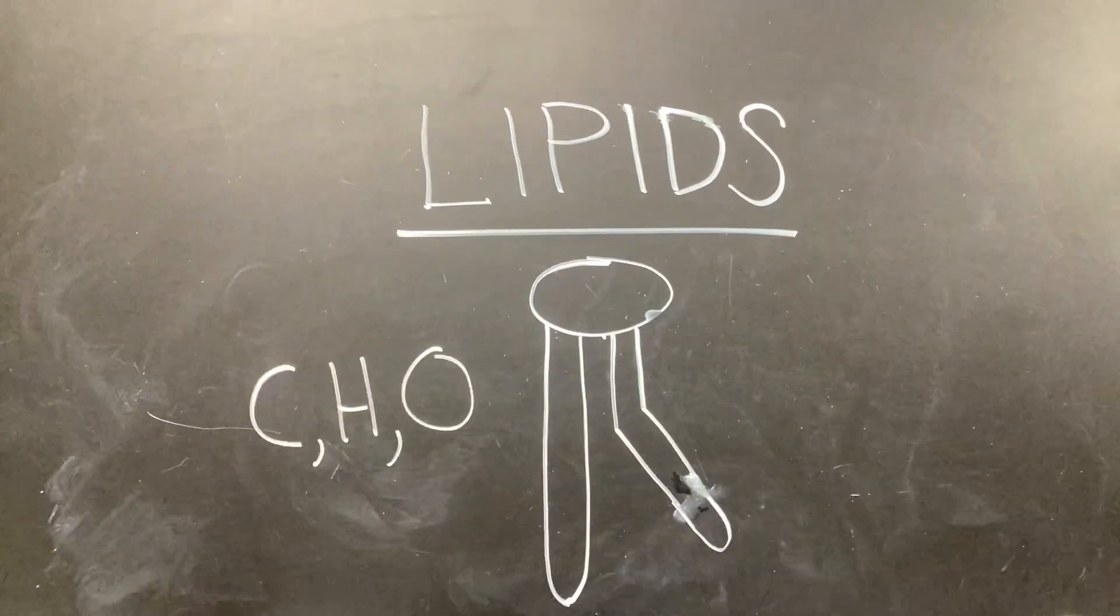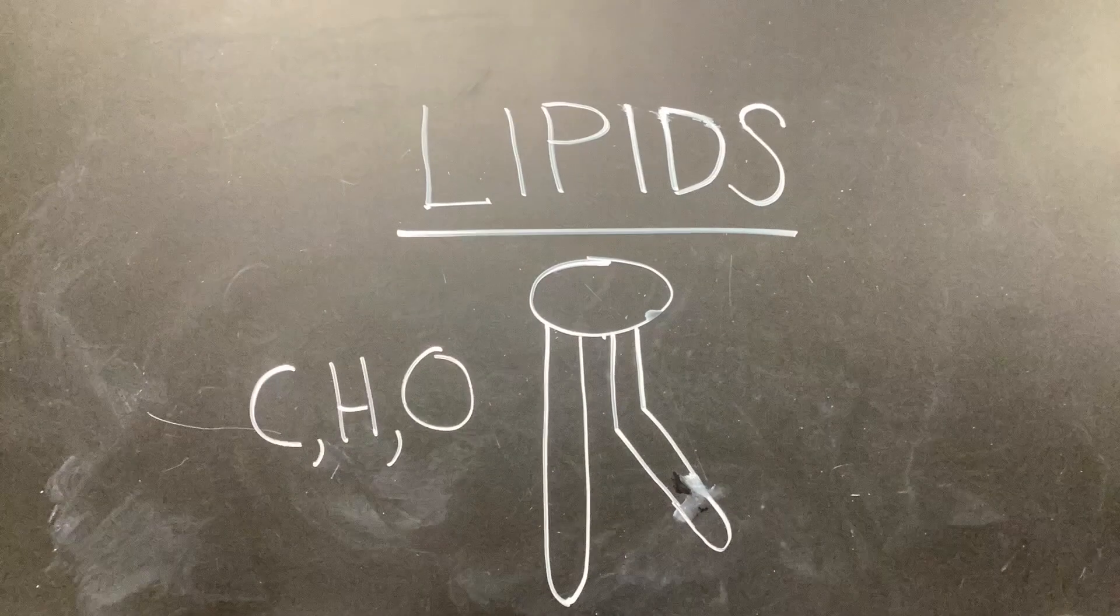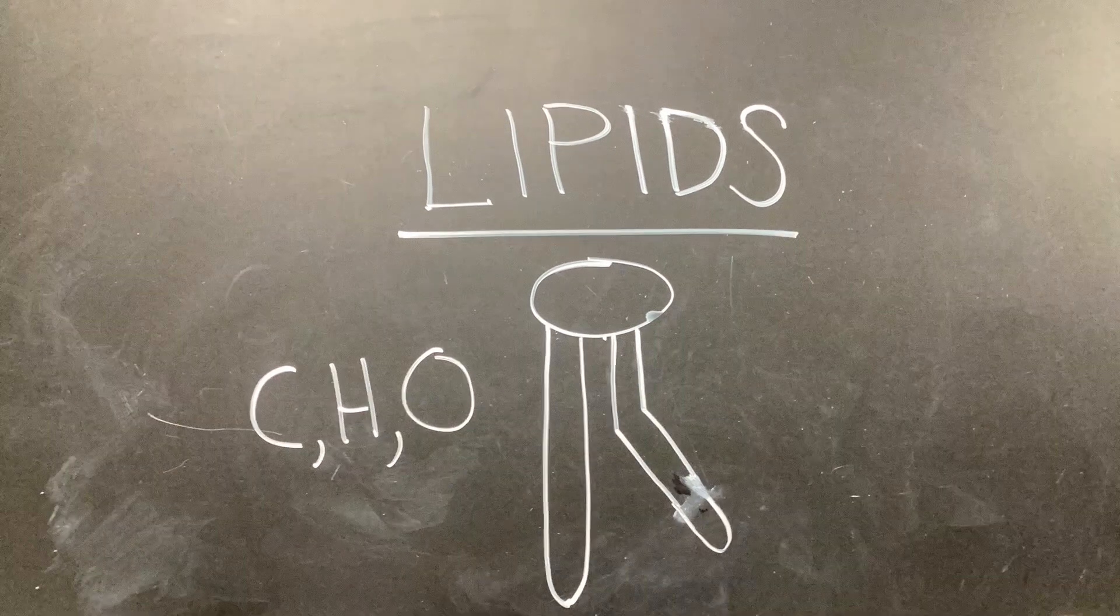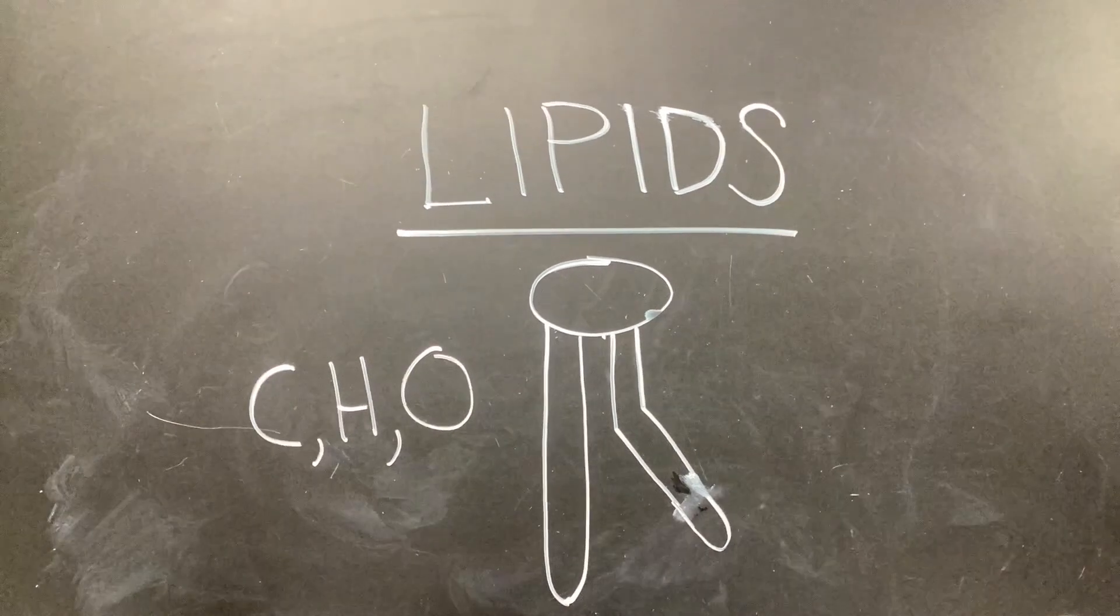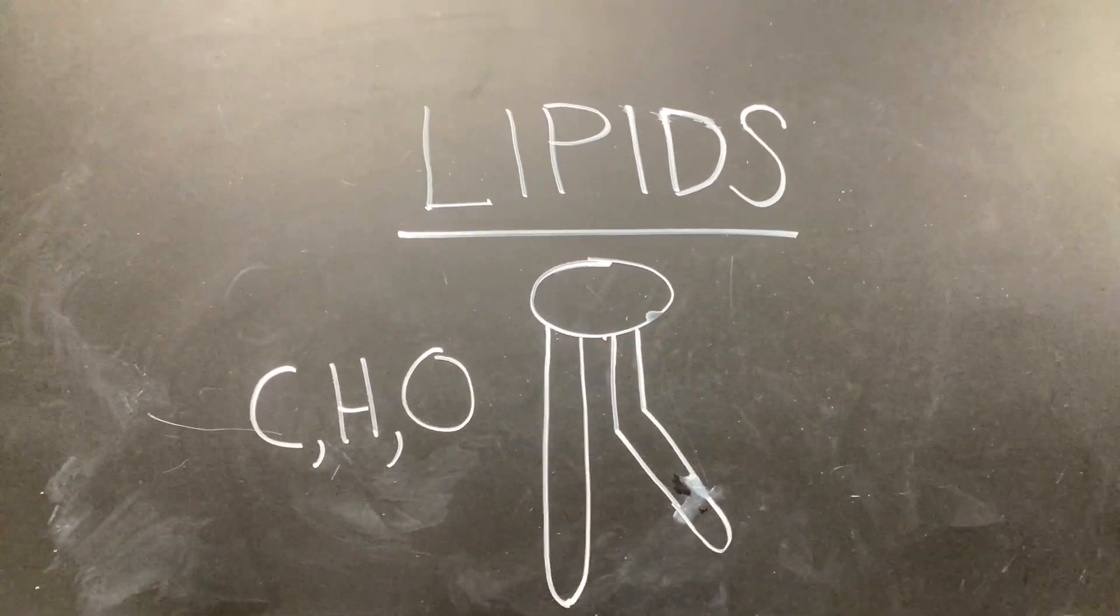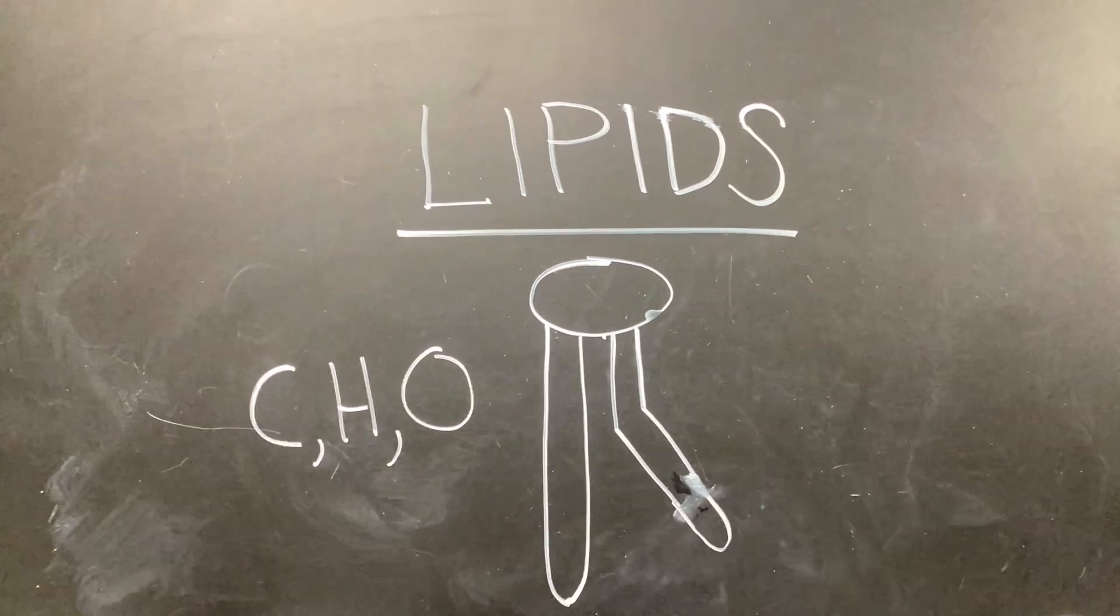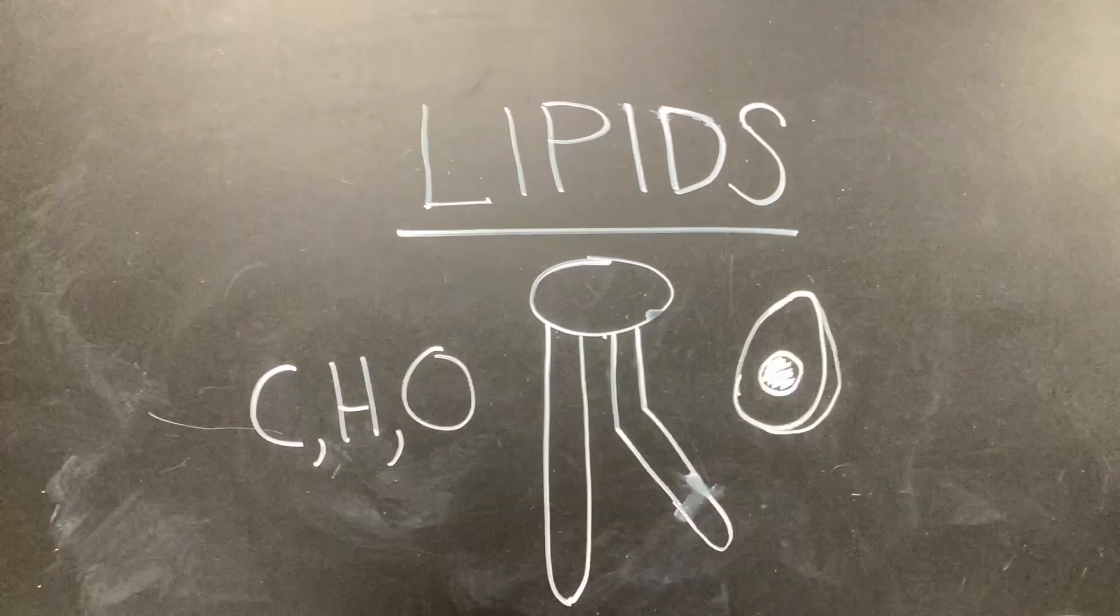The second is lipids, also composed of carbon, hydrogen, and oxygen. Lipids can be saturated or unsaturated depending on their fatty acid chains. This diagram shows an unsaturated lipid. Avocados are an example of lipids.